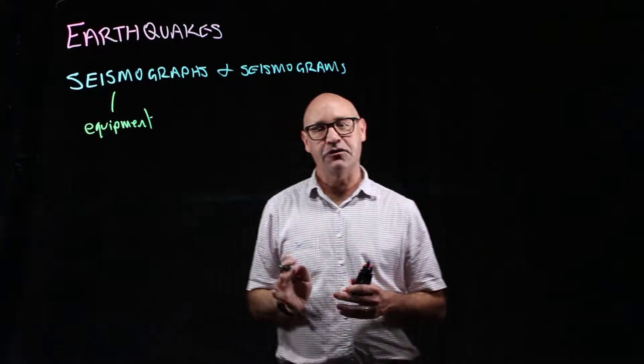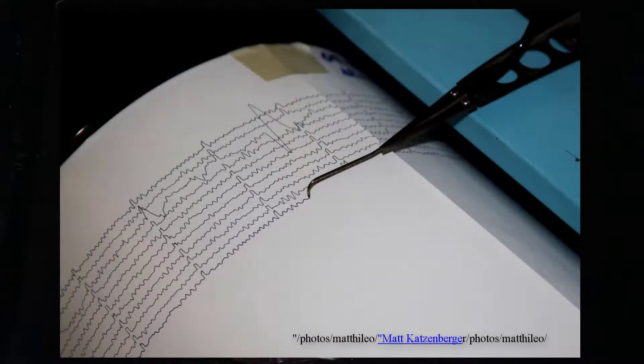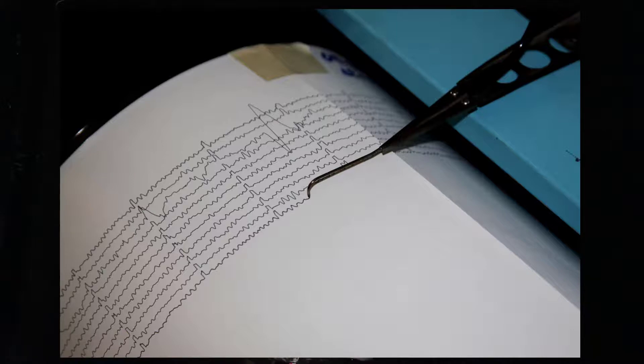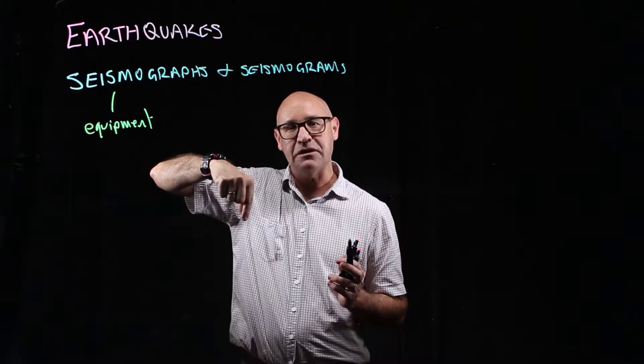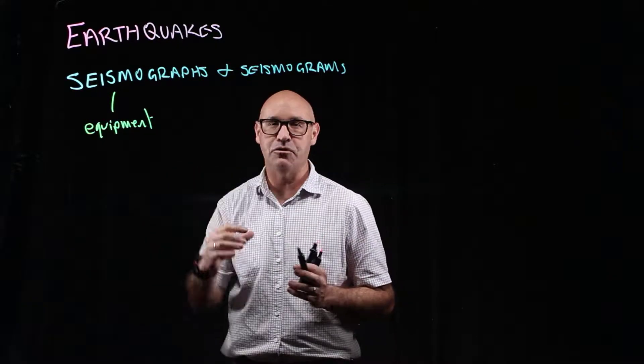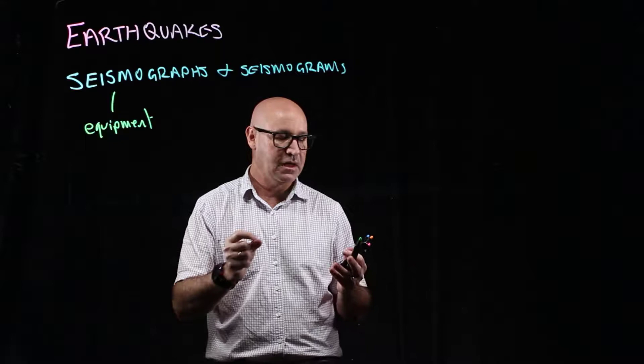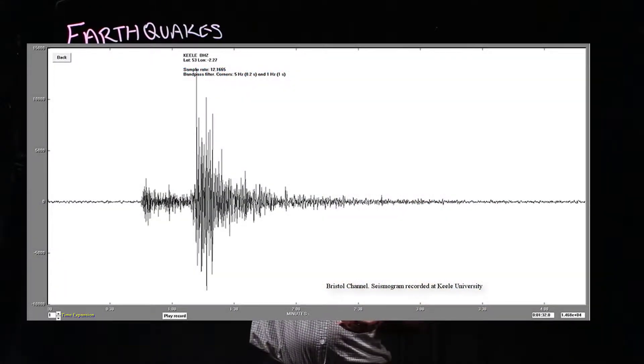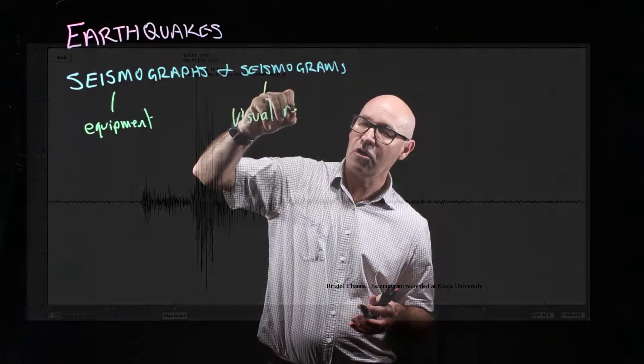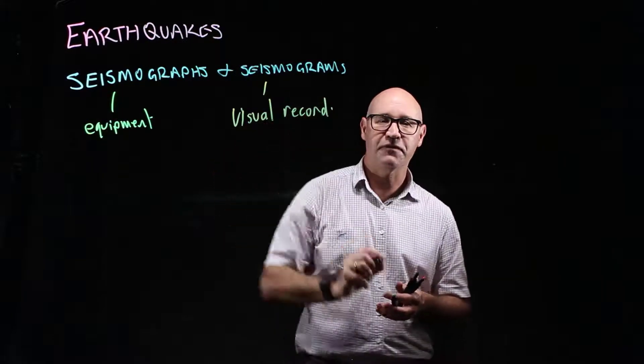It's got a drum of paper that rolls around continuously rolling, and there's a needle that if there's ever slight movement of the Earth, any vibration makes the needle move. And it produces a particular trace. So the seismogram is the visual record that is produced of the seismic event.